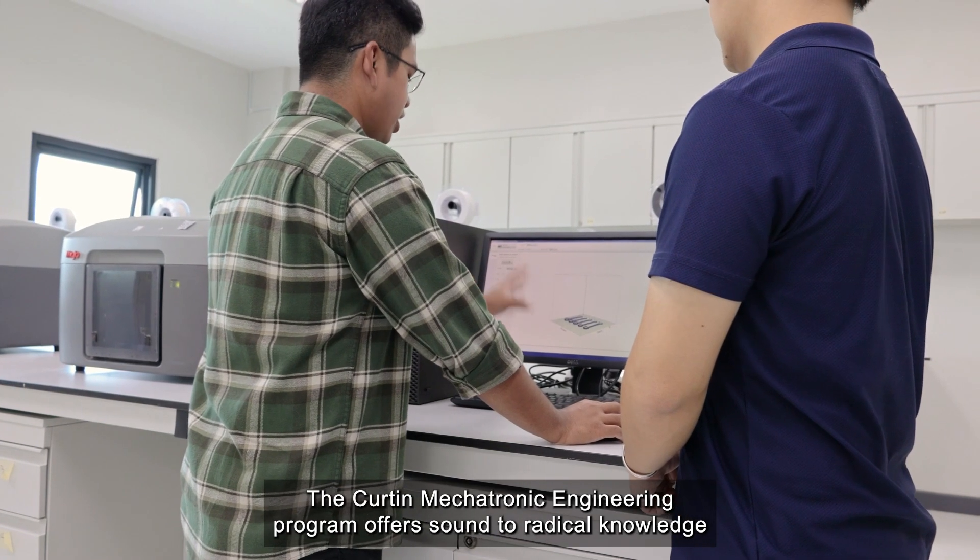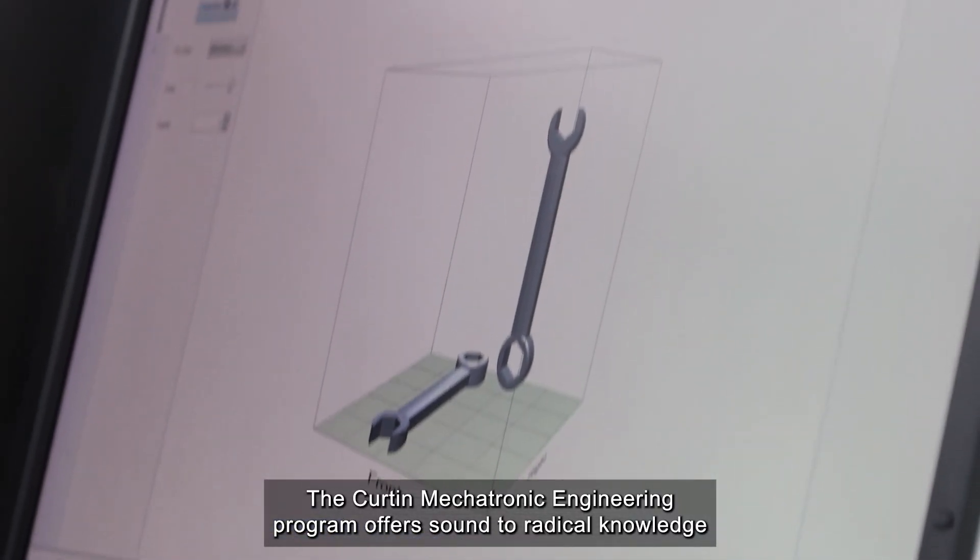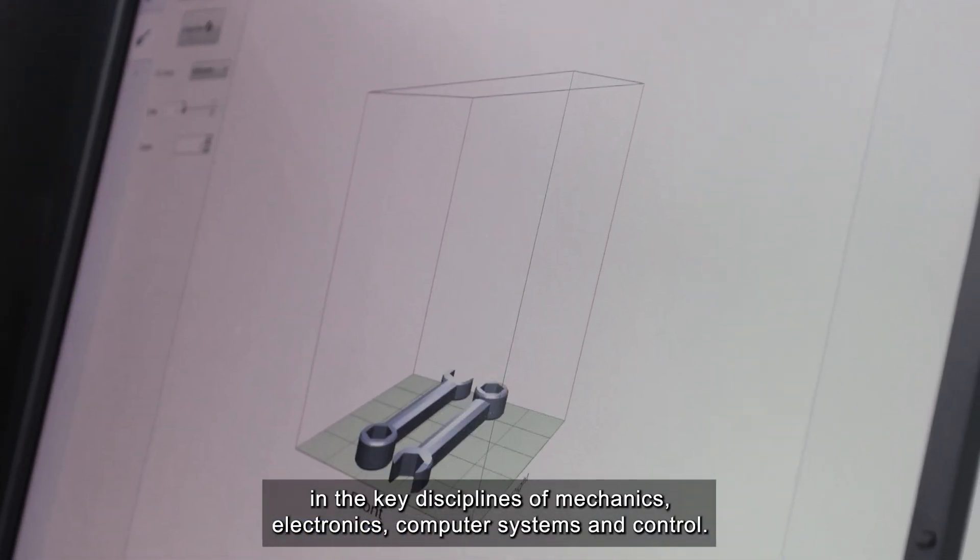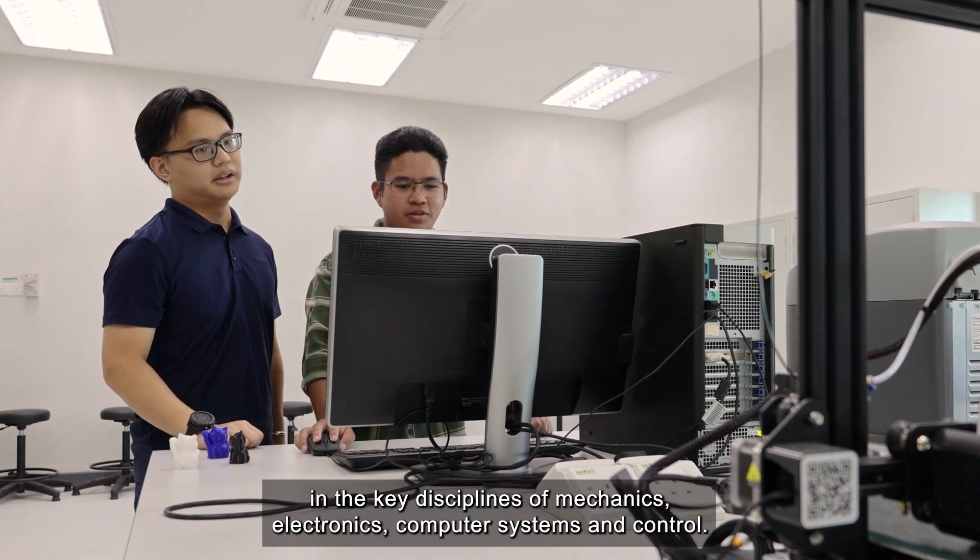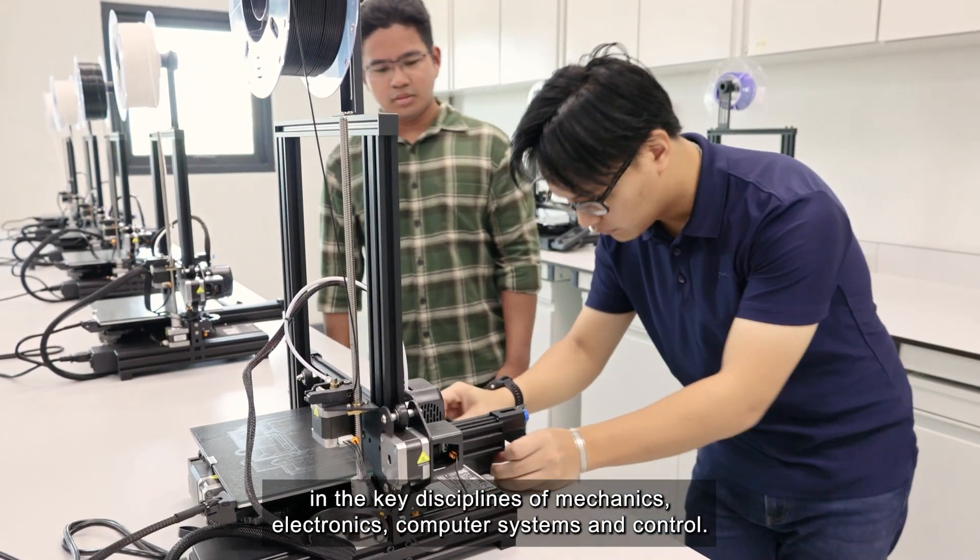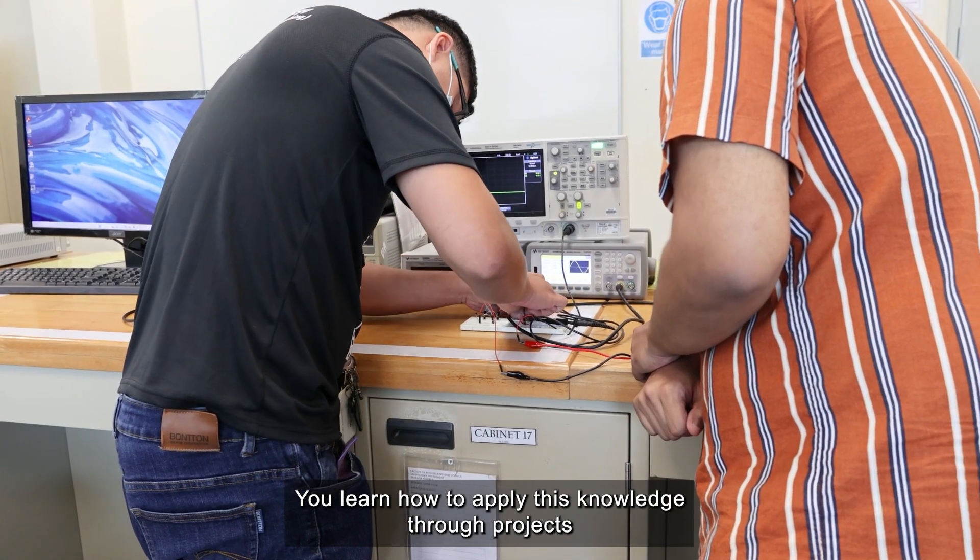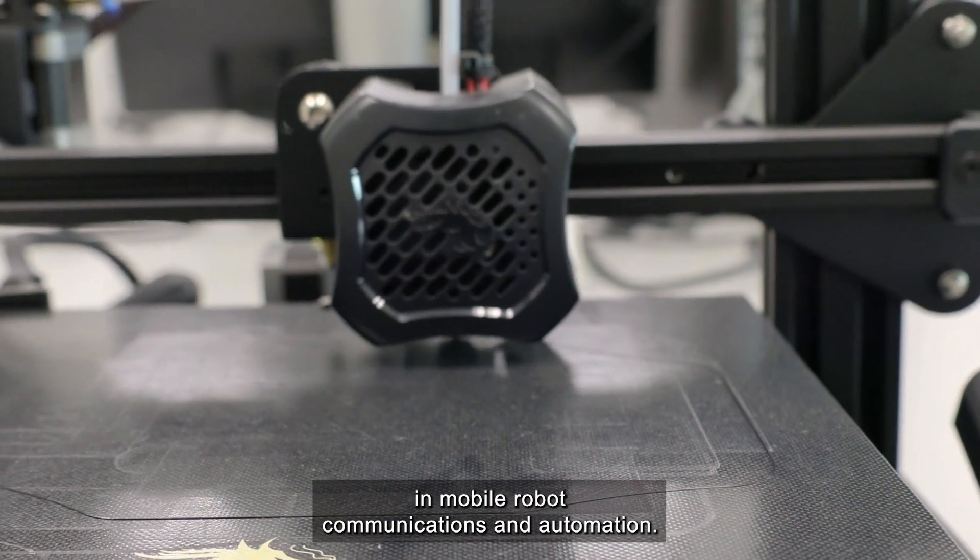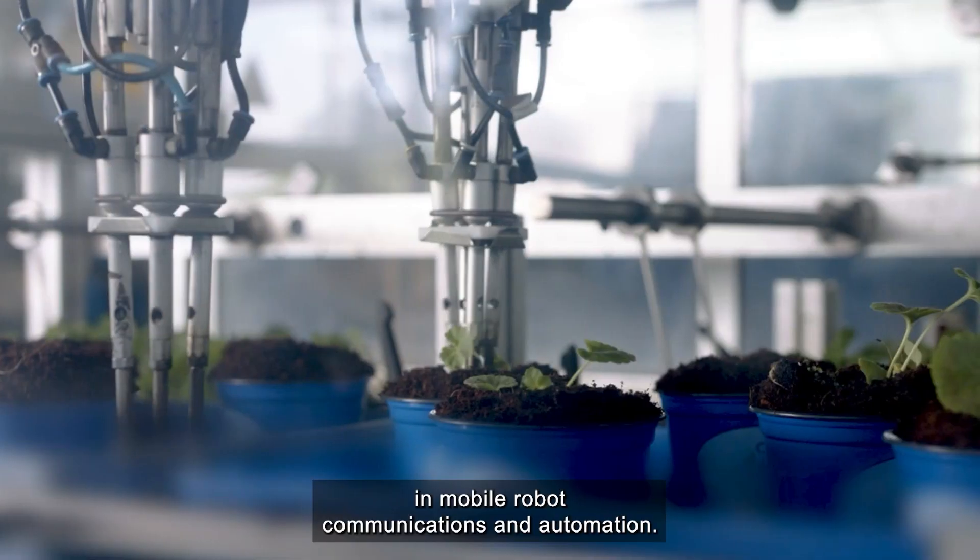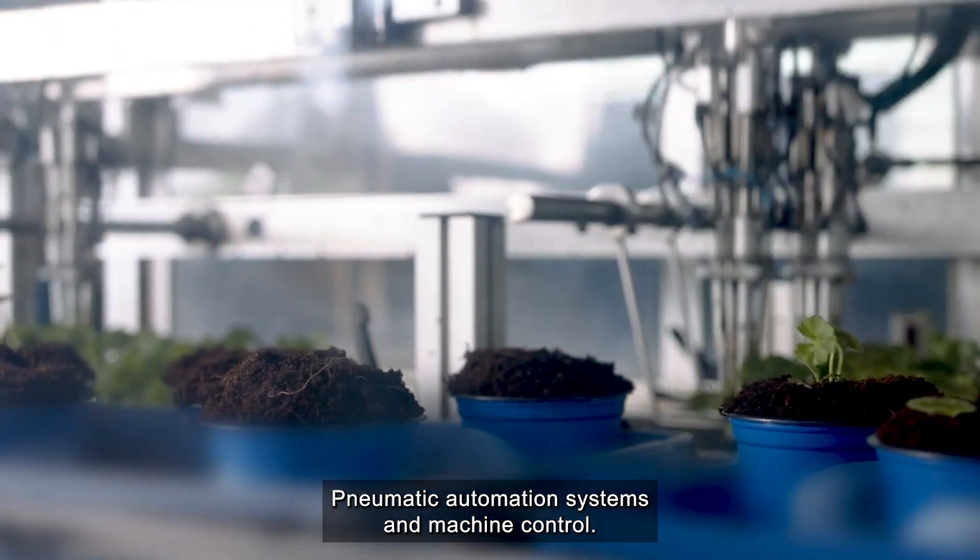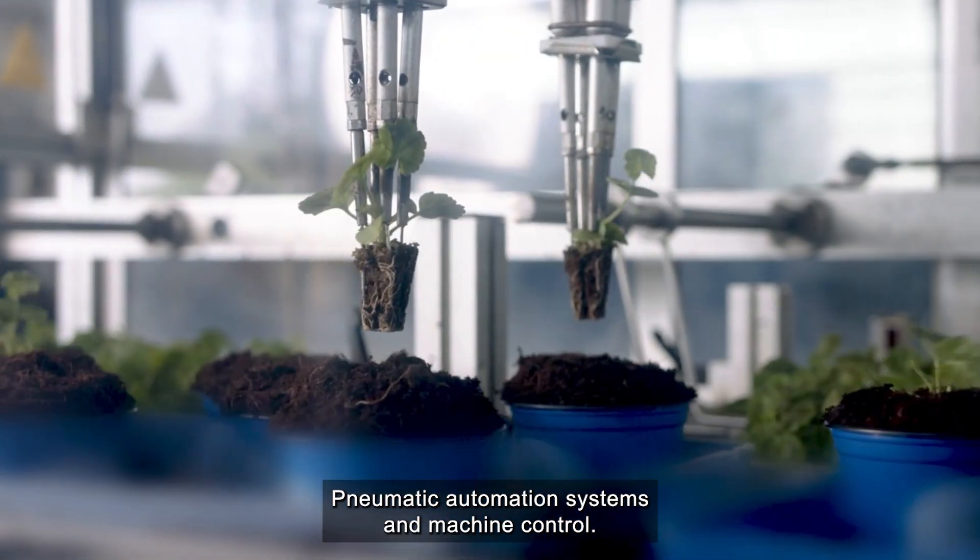The Curtin Mechatronic Engineering Programme offers sound theoretical knowledge in the key disciplines of mechanics, electronics, computer systems, and control. You learn how to apply this knowledge through projects in mobile robot communications and automation, pneumatic automation systems, and machine control.